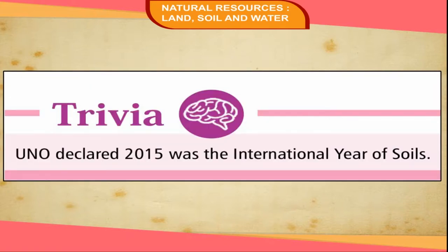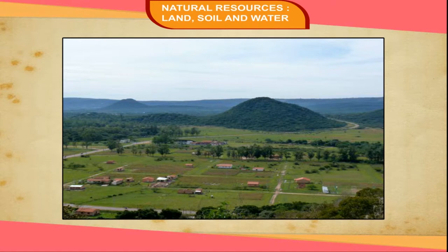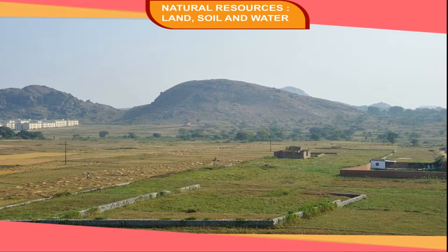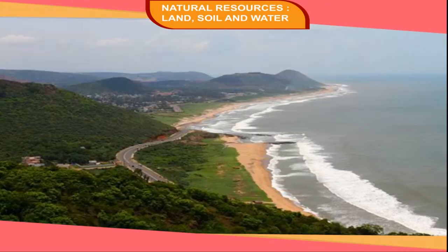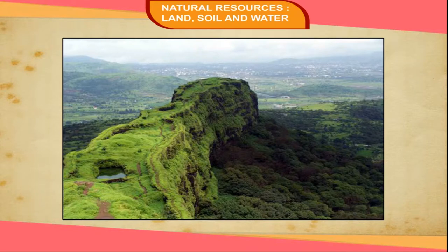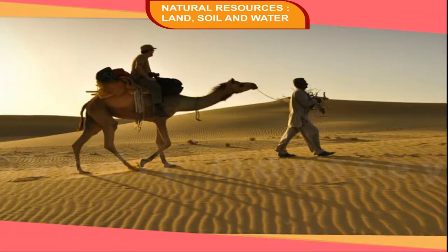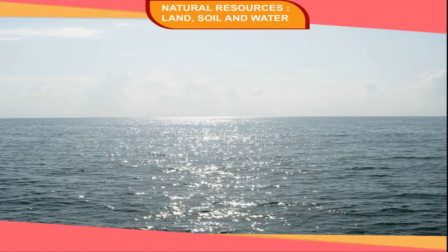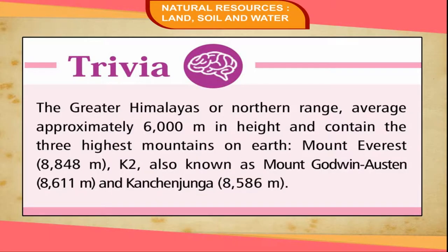The peninsular part of India is largely covered with plateau. This peninsular plateau is the oldest block of India, made up of igneous and metamorphic rocks. The northern part is called the Malwa Plateau and it continues up to the Chhota Nagpur Plateau in the east. The Deccan Plateau lies south of the Vindhyas and is bound by the Eastern and Western Ghats. The Deccan Plateau is flanked by narrow coastal plains. The western part of Rajasthan is the Great Indian Desert. India also has two major island groups: Andaman and Nicobar Islands in the Bay of Bengal, and Lakshadweep Island groups in the Arabian Sea.